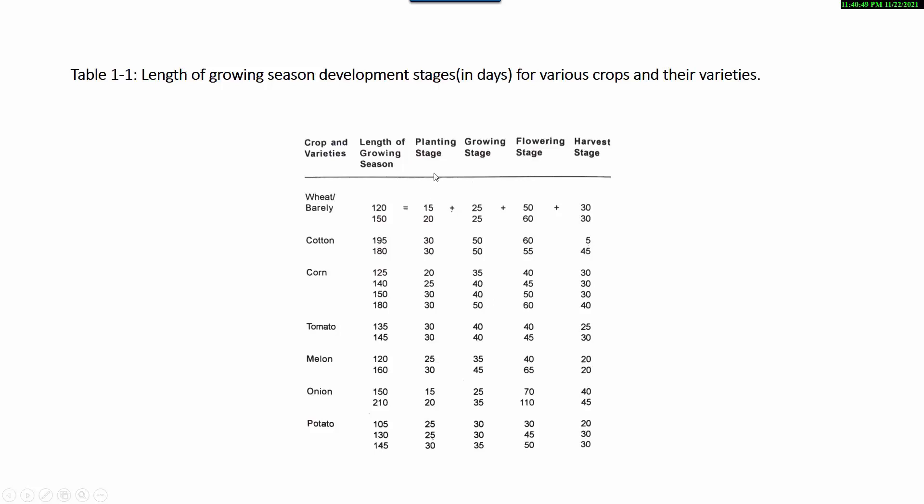For example, for wheat: 15 plus 25 plus 50 plus 30 equals 120 days.